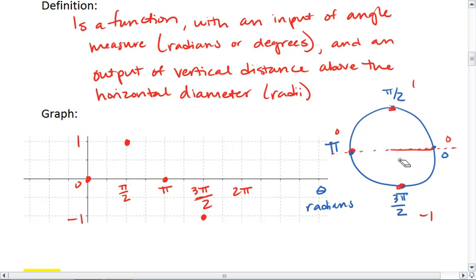And then after a full rotation, we return to the start, and we are at 0 radius lengths up or down. This gives us what is called the sine wave, and it actually repeats.